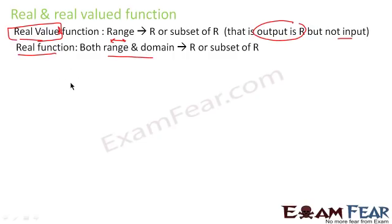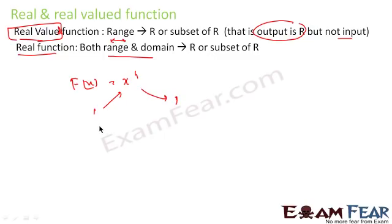An example of a real function: f(x) = x⁴. If you give a real input of 1, you get 1⁴ = 1 as output. If you give 2 as input, you get 2⁴ = 16 as output. This is an example of a real function where input is real and output is real.